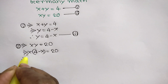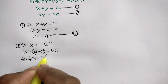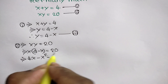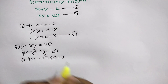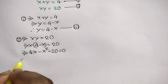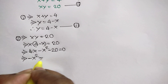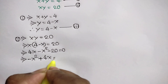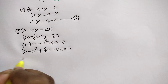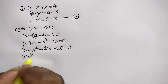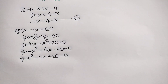Expanding: 4x minus x squared is equal to 20. Taking negative 20 to the left side, we get 4x minus x squared minus 20 is equal to 0. Rearranging: negative x squared plus 4x minus 20 equals 0. Multiplying both sides by negative 1, we get x squared minus 4x plus 20 is equal to 0.